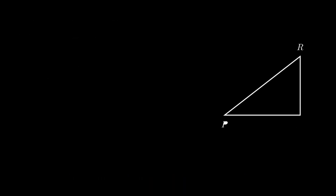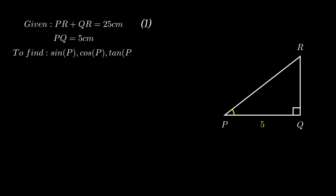Consider triangle PQR right angled at Q, such that the sum of side PR and QR equals 25 cm, and side PQ measures 5 cm. We need to find the values of sine P, cosine P, and tangent P, for which we need to find PR and QR. Since PR and QR can't be simplified directly due to different variables, we substitute both in the same variable. Let side PR equal X cm. Therefore, using equation 1, side QR equals 25 minus X cm.